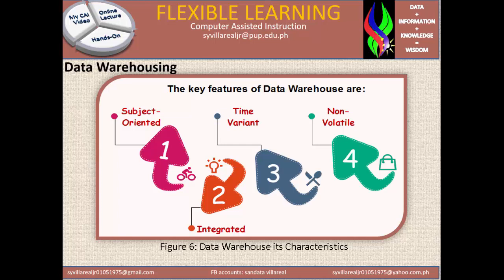In Figure 6, we see the Data Warehouse characteristics. The key features of a data warehouse are: Number 1, Subject Oriented; Number 2, Integrated; Number 3, Time Variant; and Number 4, Non-Volatile.